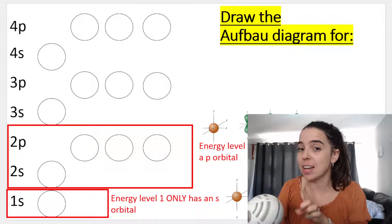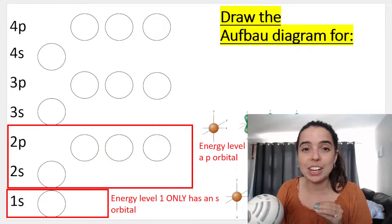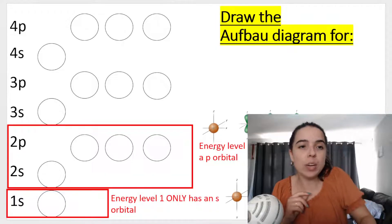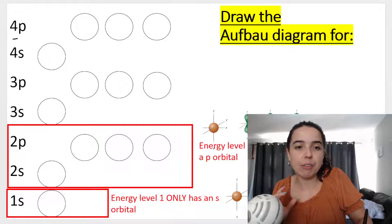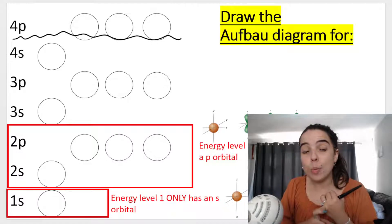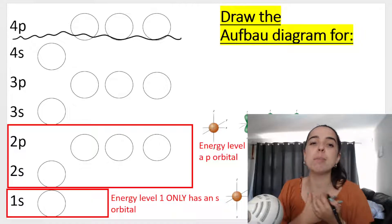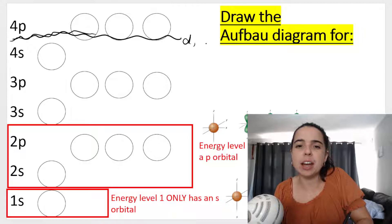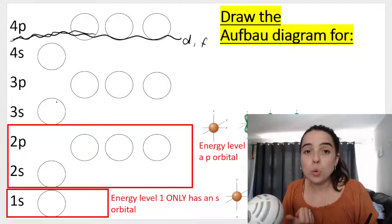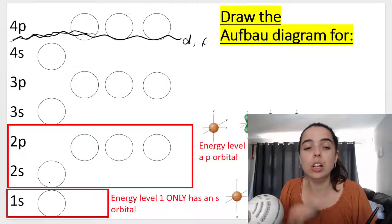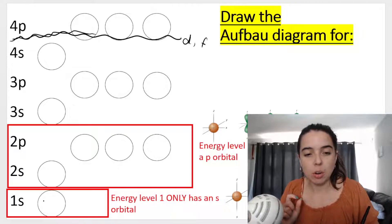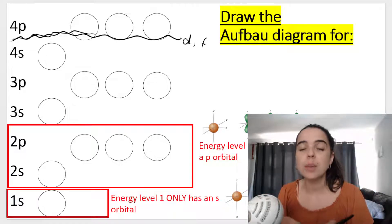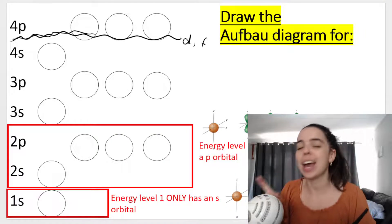A super quick recap — this does not mean you shouldn't go watch the previous video, because you must. This is what a blank orbital diagram looks like, and this is what you're going to be filling in. At school level we generally stop at 4s. There are d and f orbitals, but we work with s and p orbitals. S orbitals can hold a total of two electrons. Energy level one starts at the bottom, closest to the nucleus, and only has an s orbital.